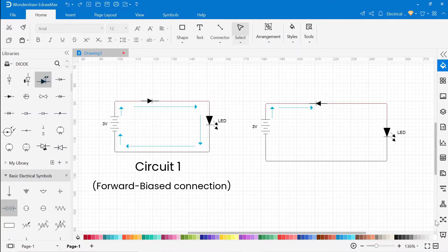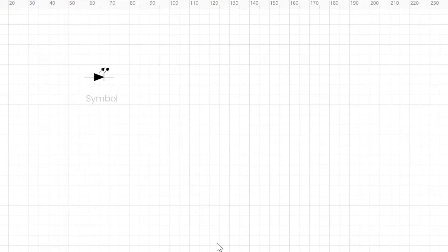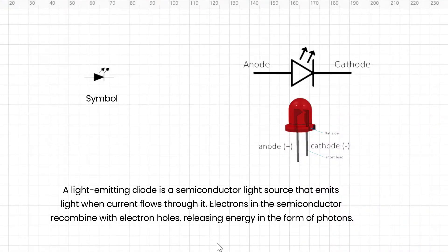Here in the first circuit the diode is forward biased, and in the second circuit the diode is reverse biased. Basically, a light-emitting diode is a semiconductor light source that emits light when current flows through it. Electrons in the semiconductor recombine with the electron holes, releasing energy in the form of photons.